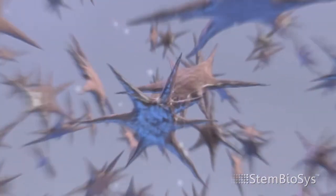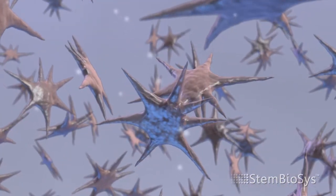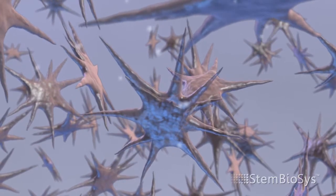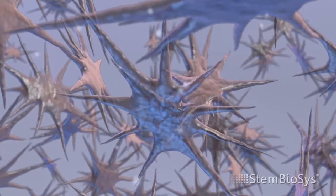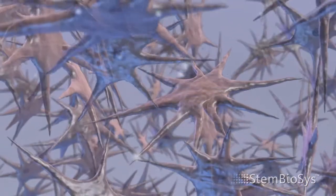We add a proprietary culture medium, and the cells begin to divide, increasing cell numbers and fully covering the surface of the dish or other culture substrate.